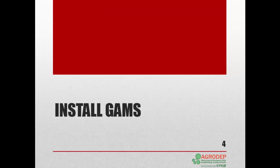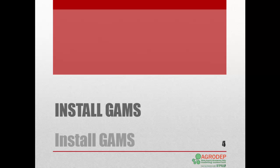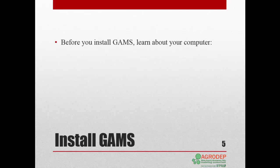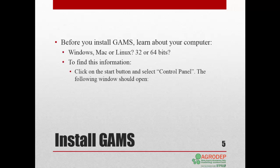Let's go through the process of installing GAMS. Before you start the installation, you need to learn a little bit about your computer. Here we'll be using a Windows 7 system, but you can install GAMS on Windows, Mac, or Linux, and in 32 or 64-bit. If you're installing on Mac or Linux, or an older Windows operating system, you should follow the instructions on the GAMS website.